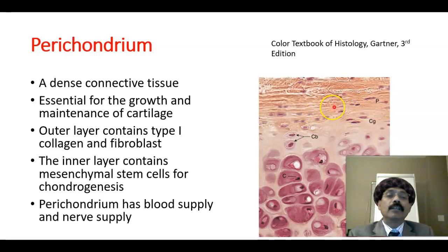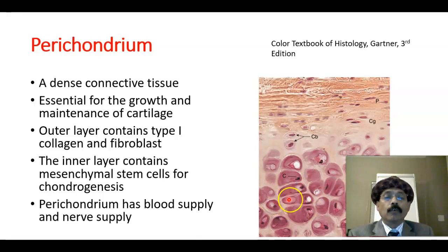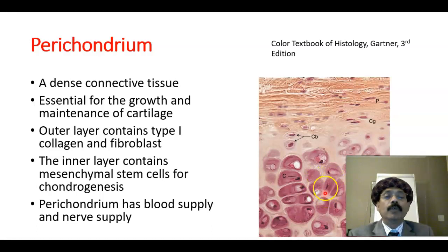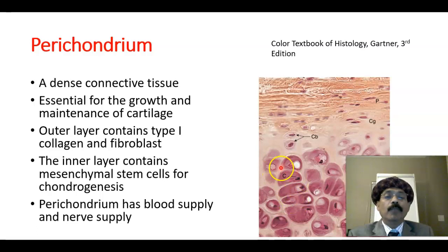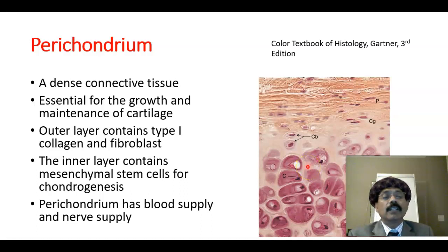From the chondrogenic layer we get chondroblasts, and chondroblasts become the large chondrocytes. Those chondrocytes may stay singly or may be in an isogenous group within a lacuna. In a lacuna, we may have one chondrocyte or multiple chondrocytes. Matrix formation around the chondrocyte is the territorial matrix; matrix between the isogenous groups or between cells is the interterritorial matrix.